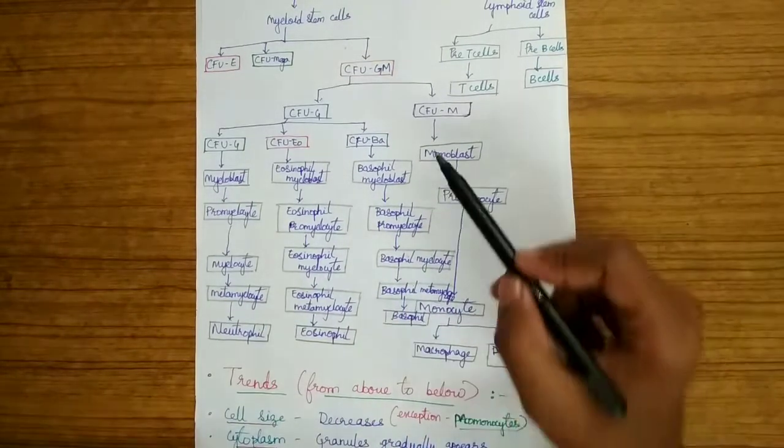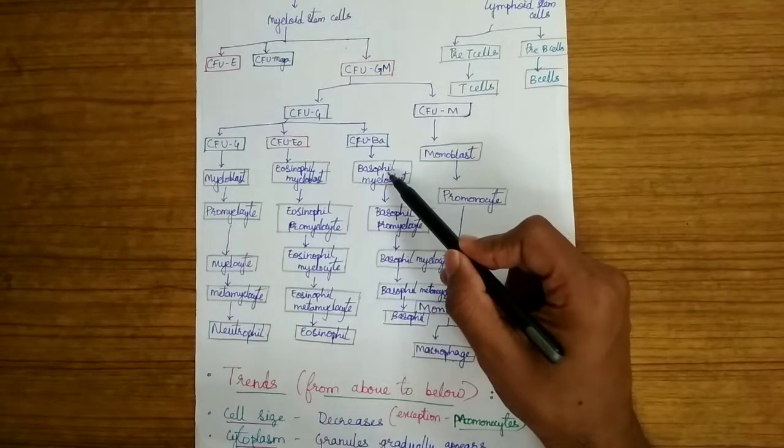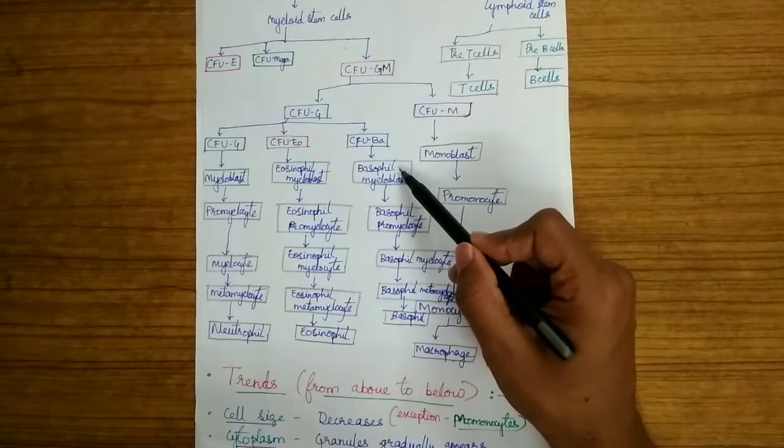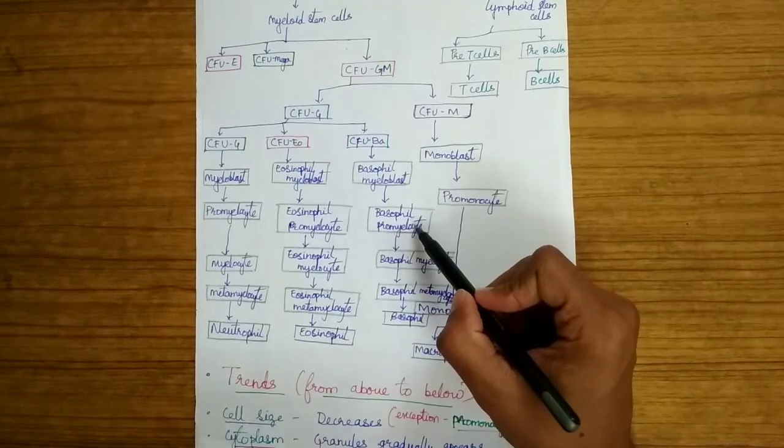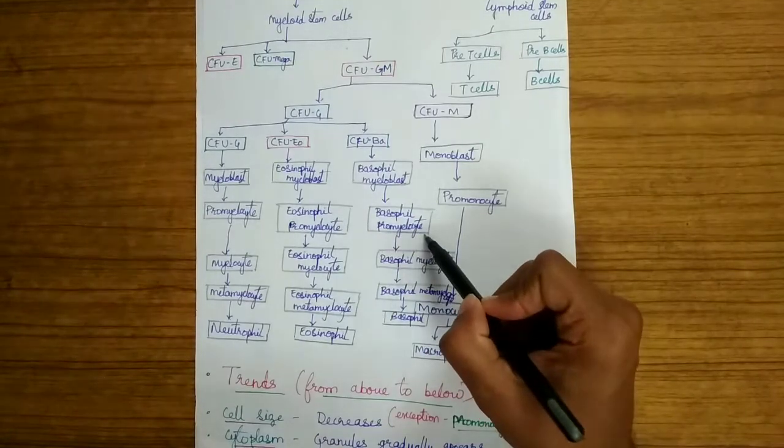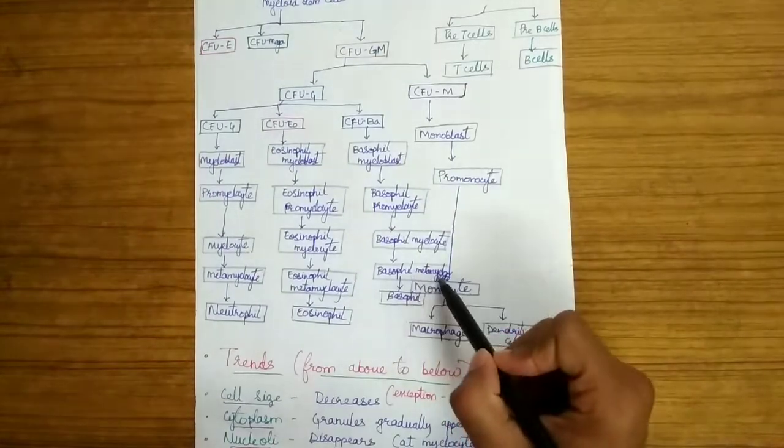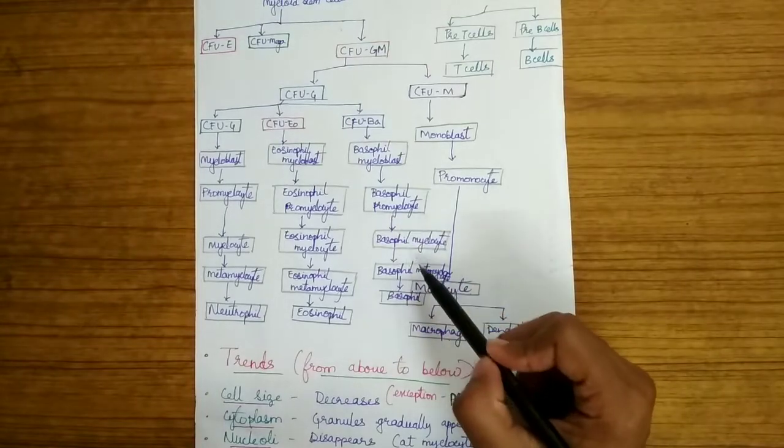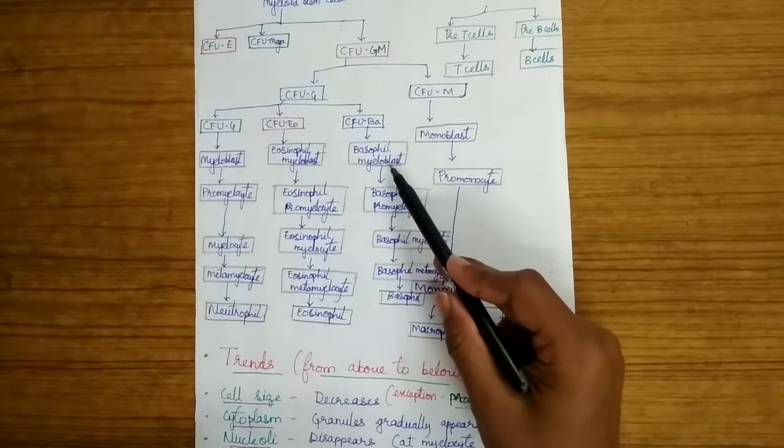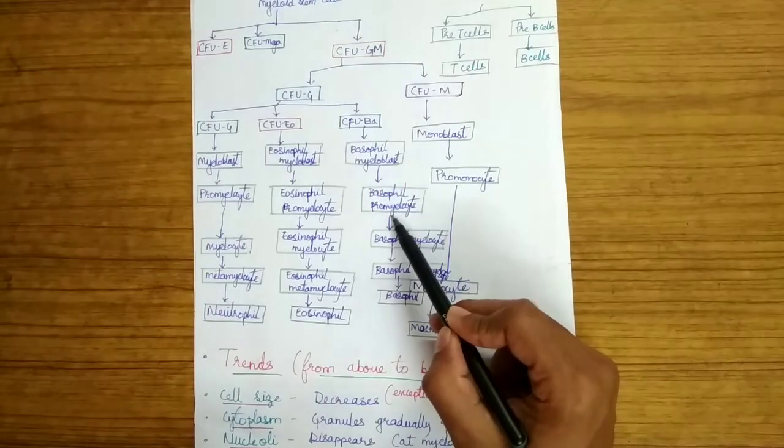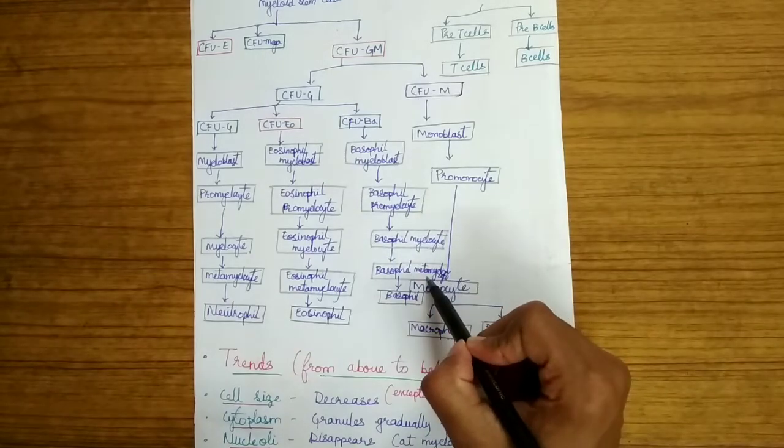You can remember this by B comes first, so the blast cells always come first. Then comes C, so then it's promyelocyte, myelocyte and metamyelocyte: pro, myelo and meta. The first comes blast cells, then promyelocyte, then myelocyte, then metamyelocyte. If you remember this order, you can easily remember this flowchart.